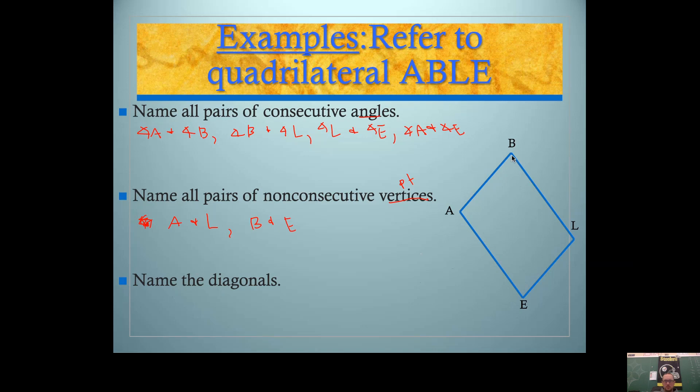Name the two diagonals. Well, we just did this work. If you connect points B and E, that will make a segment, but it's not a side of a quadrilateral. That's why it's called the diagonal. So segment BE is a diagonal. Also segment AL is a diagonal.